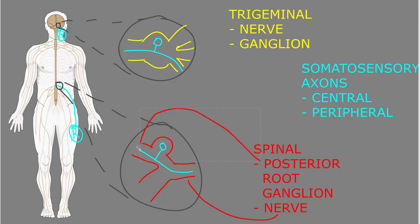So for most of the body, this is where the somas are for somatosensory neurons, but for the face and a few other parts of the head, they are in the ganglia of the trigeminal nerve.